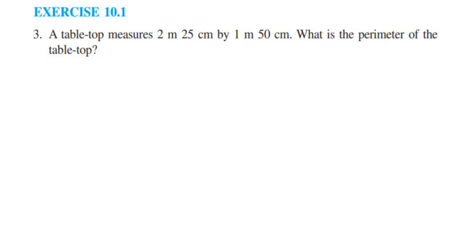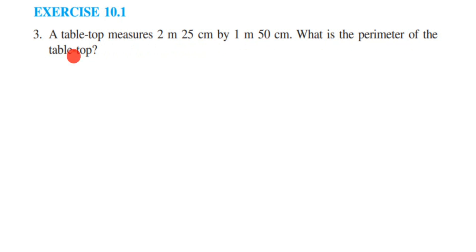Here's a question on exercise 10.1, third question, from the mensuration chapter of class 6. The question is: a tabletop measures 2 meter 25 centimeter by 1 meter 50 centimeter — what is the perimeter of the tabletop? They have not given length and width directly; instead, these dimensions represent the length and breadth.